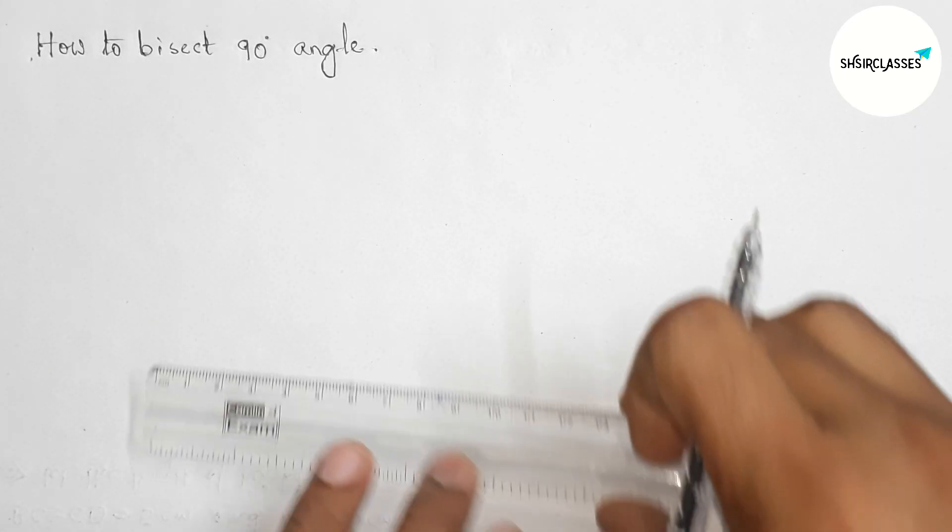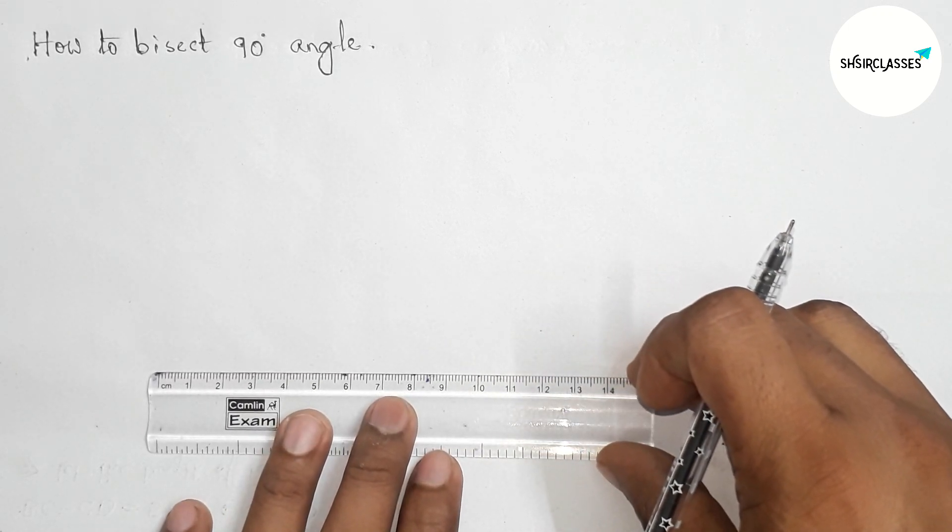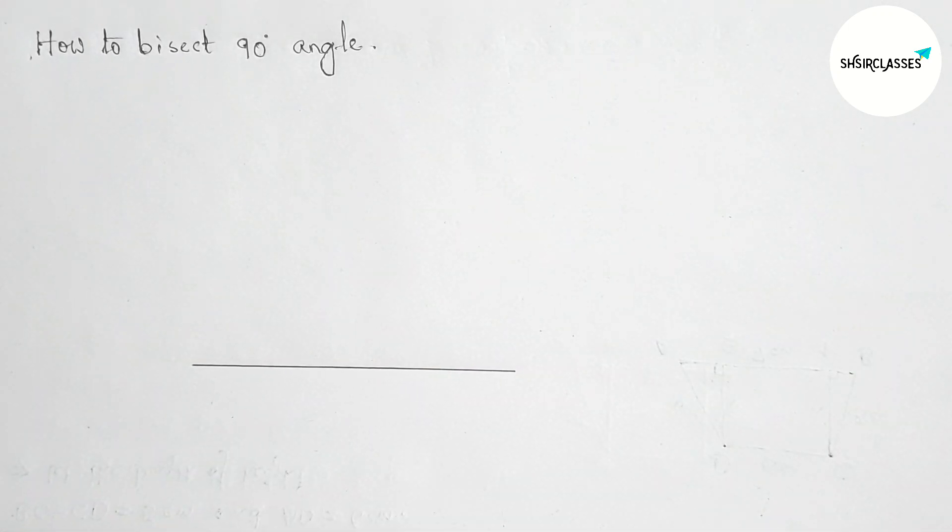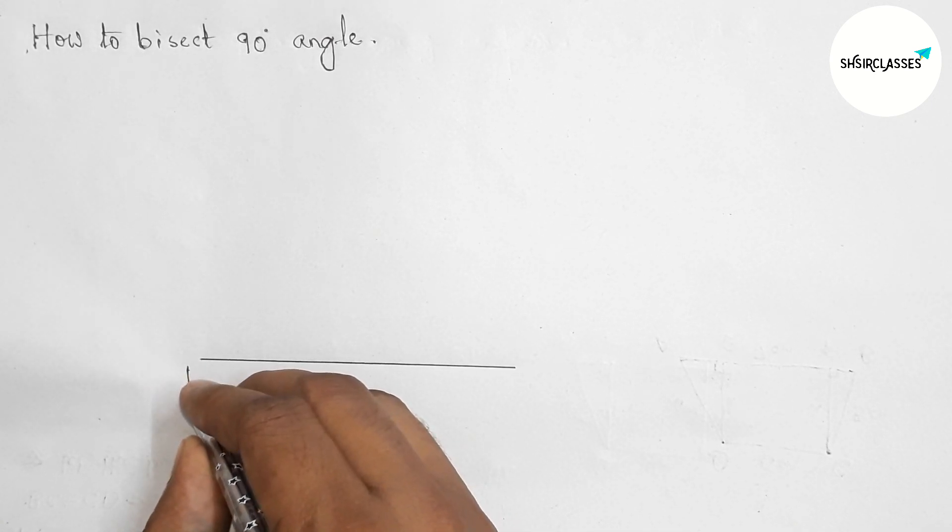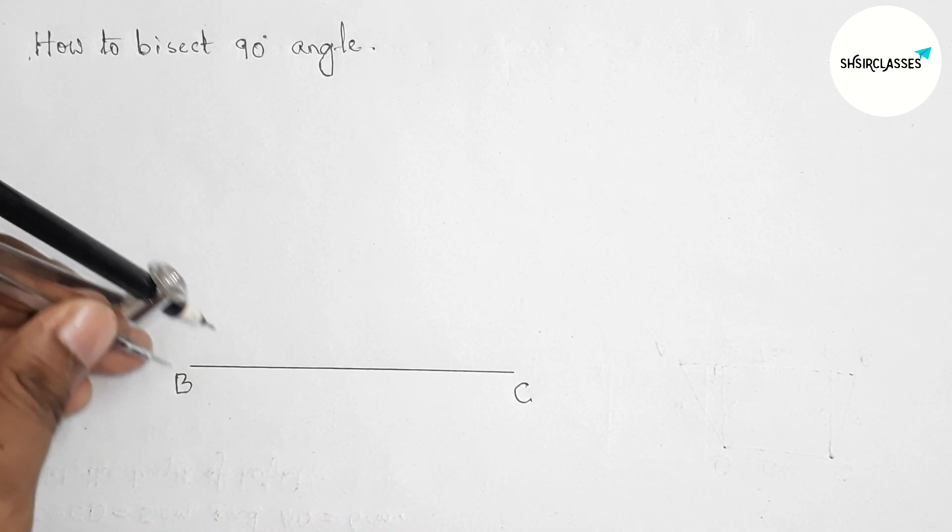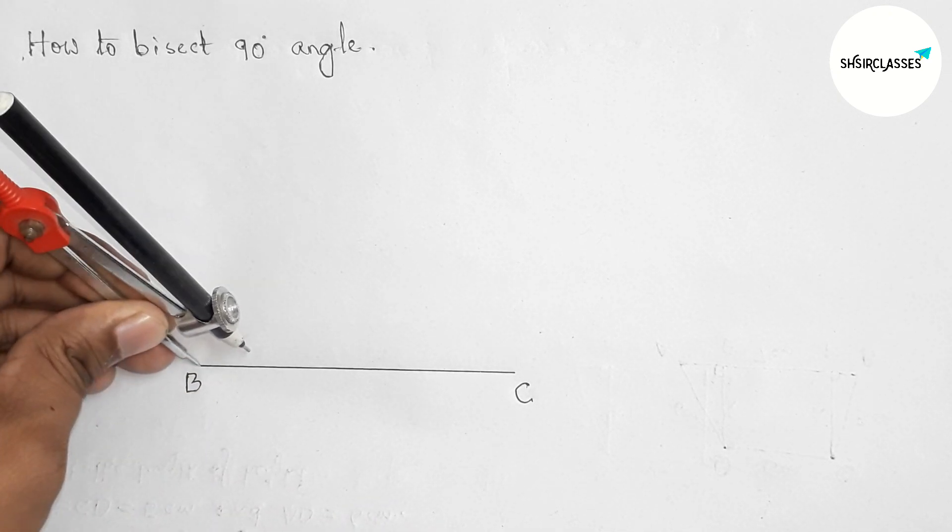First of all, let us draw here a line segment of any length by this way. Now taking here point B and here C. Next, drawing a 90-degree angle on point B with the help of a compass.